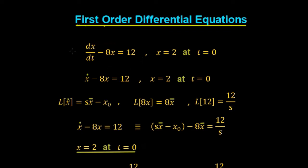Whenever you solve a differential equation, you're going to have a function. So the function at the end will be x equals something, and that's what we're trying to find out here. We'll change the nomenclature — rather than dx/dt, we'll use x-dot. So we've got x-dot minus 8x equals 12, with initial conditions t equals 0, x equals 2.